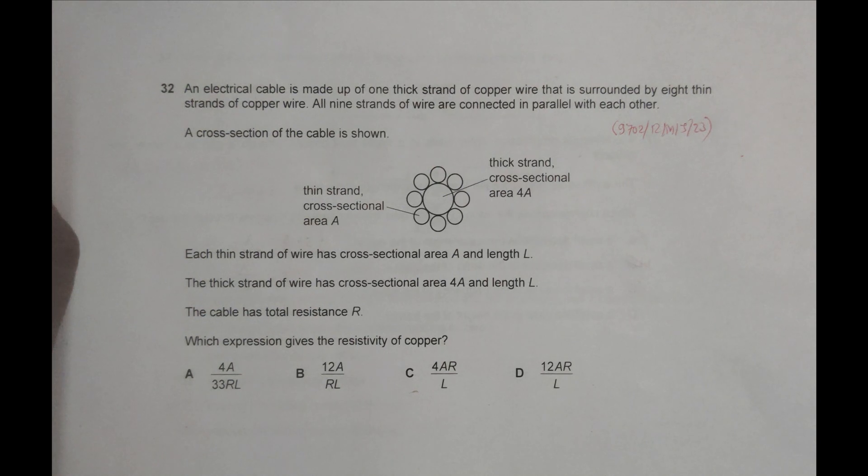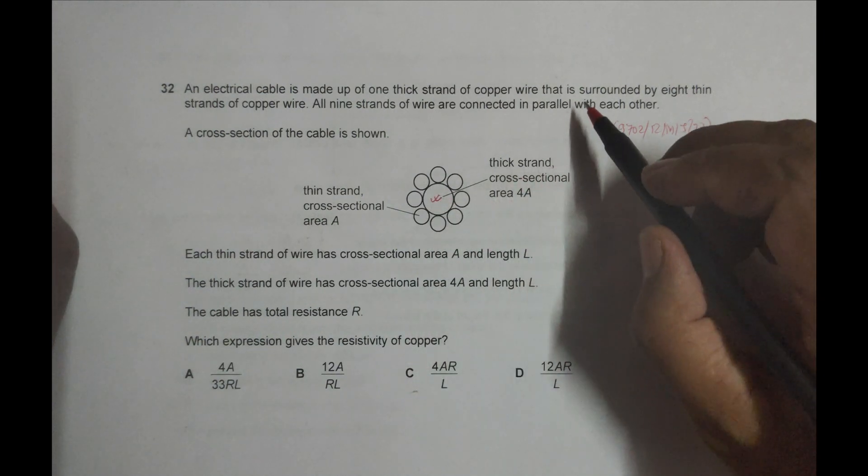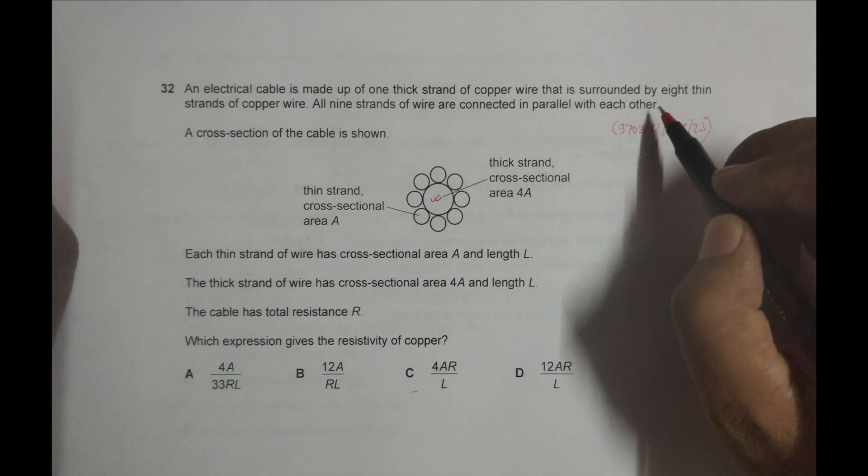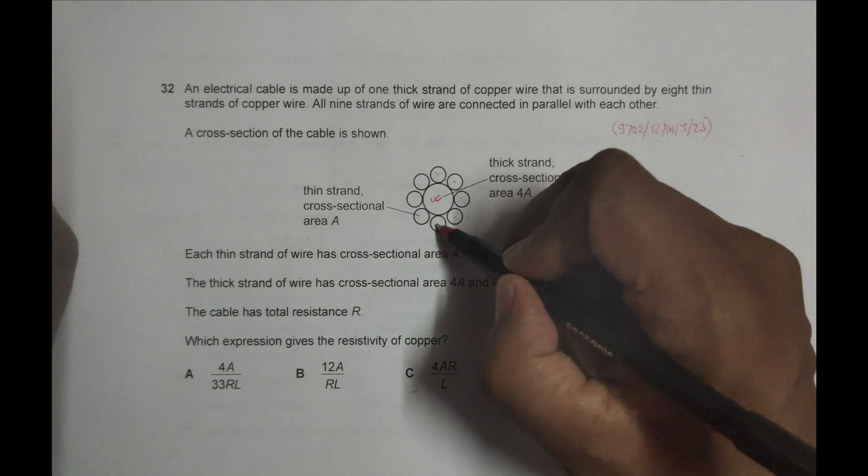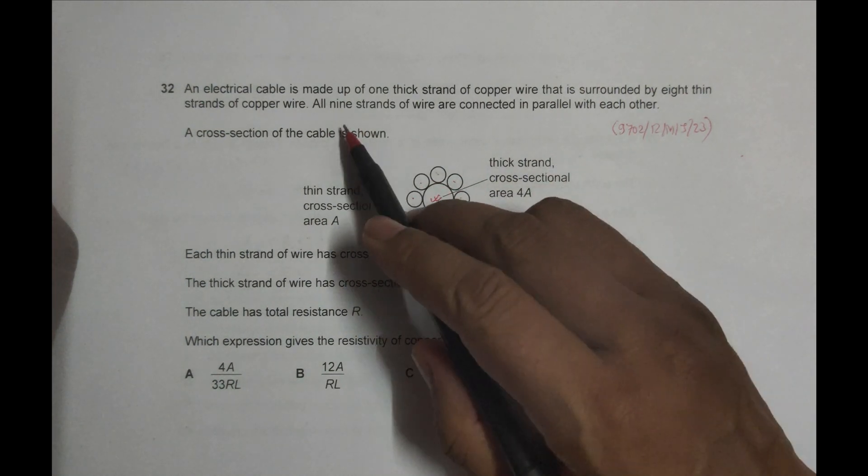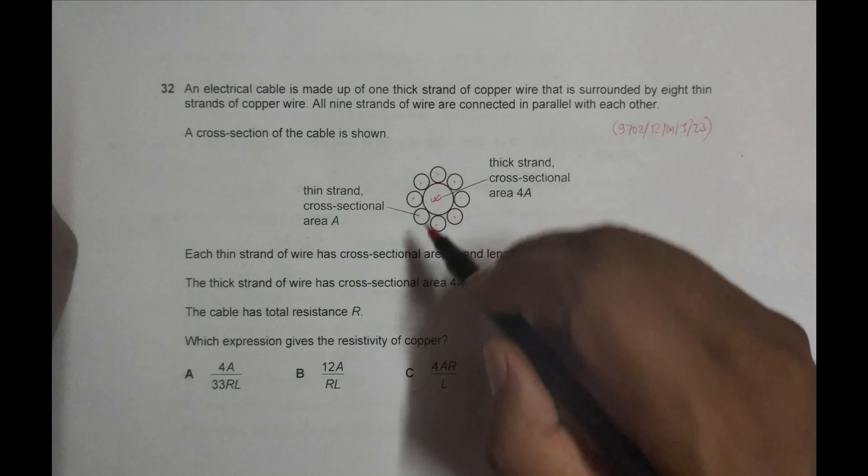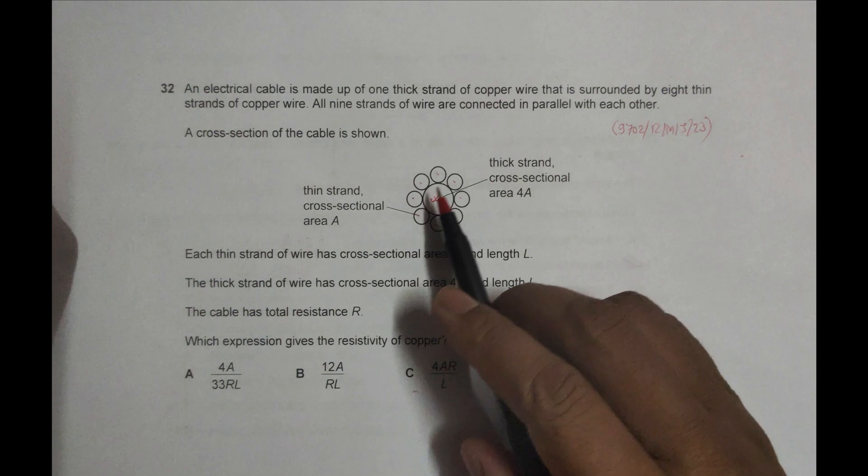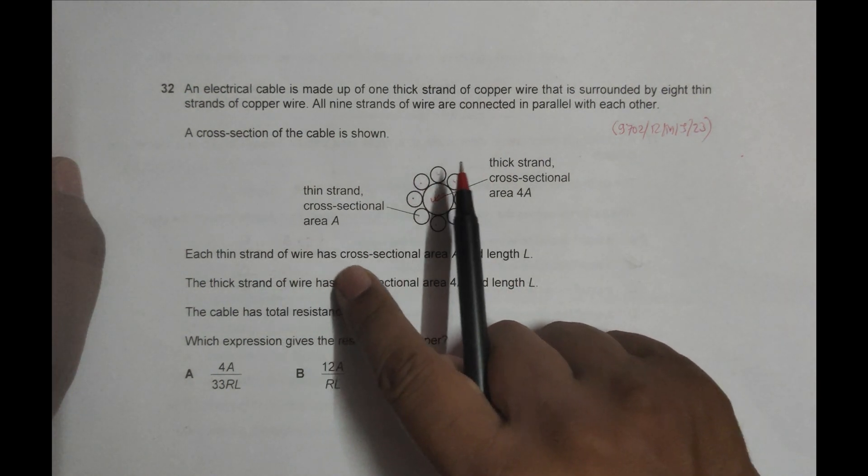An electrical cable is made of one thick strand of copper wire that is surrounded by eight thin strands of copper wire. So these are the eight others: one, two, three, four, five, six, seven, eight. All nine strands of wire are connected in parallel with each other.